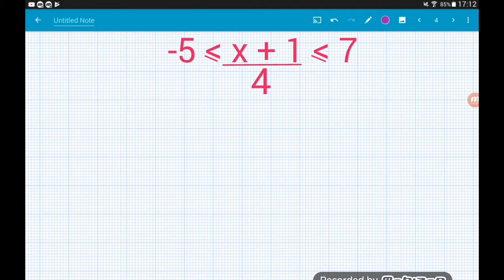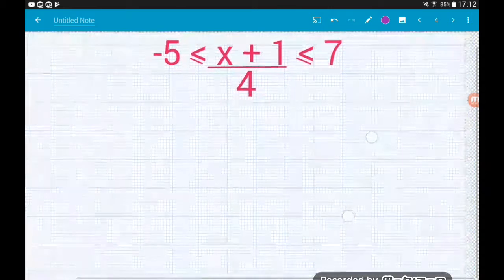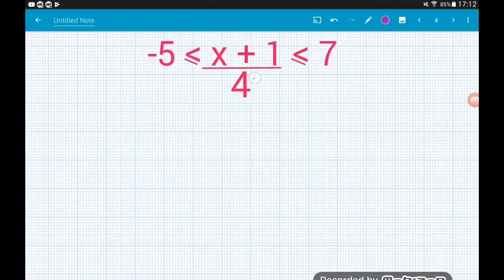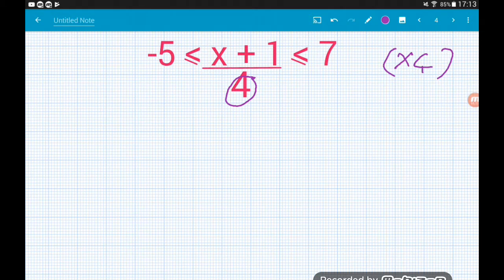Okay. x plus 1 over 4 is greater than or equal to minus 5, less than or equal to 7. So what's our first move here? Well, it is to sort out this 4, the 4. So again, that's a division by 4. So we multiply each of the three bits of the inequality by 4. So minus 5 times 4 is minus 20, which is less than or equal to x add 1, which is less than or equal to 4 times 7 is 28.